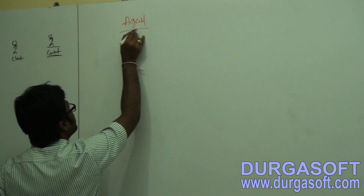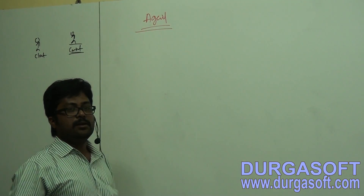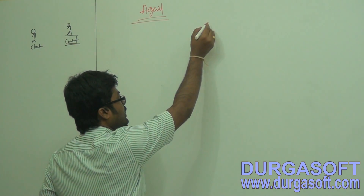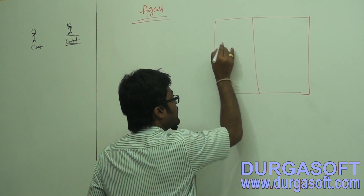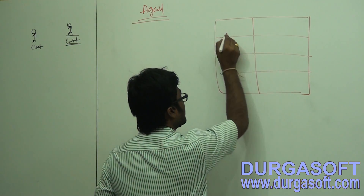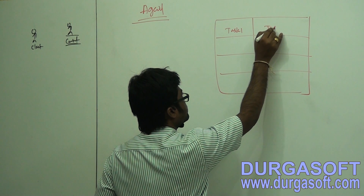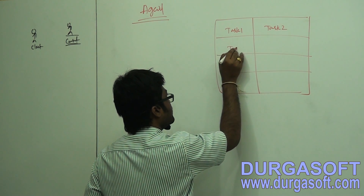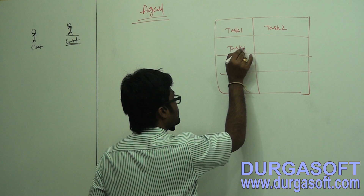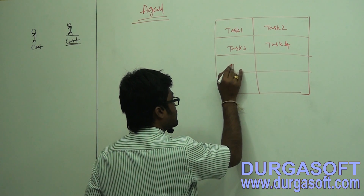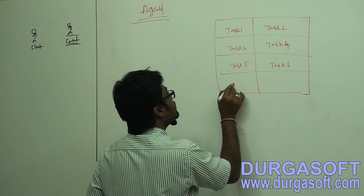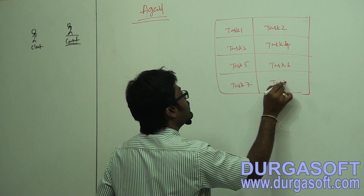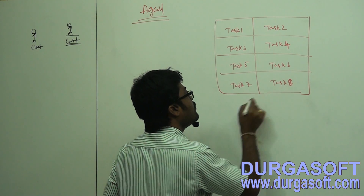In the case of the Agile model, you need to divide the task into multiple pieces — multiple scrums. If you have a complete project, you divide it into task 1, task 2, task 3, task 4, task 5, task 6, task 7, task 8. The combination of these eight tasks is one project.